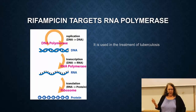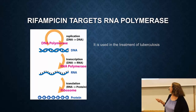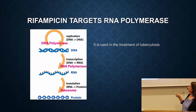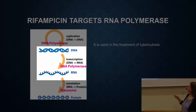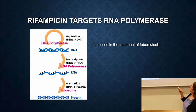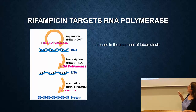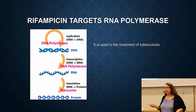Another antibiotic is called rifampicin. Here's our DNA and DNA polymerase. The next step in protein synthesis is making RNA. The enzyme RNA polymerase is required to make RNA. Rifampicin binds RNA polymerase and just stops it — it binds but then can't do anything. This is commonly used in the treatment of tuberculosis.